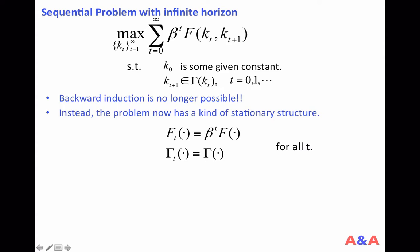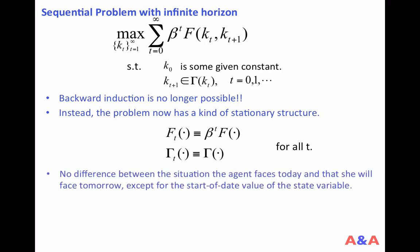The period return and the constraint that you face at the current date, the period return and the constraint for the next date, and those for the day after the next, these don't change. At every date, you solve the same problem with a possibly different state given. To summarize, there is no difference between the situation the agent faces today and that she will face tomorrow except for the start-of-date value of the state variable.